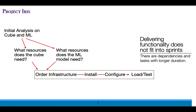As an example, in traditional projects where you were creating your own infrastructure, you'd have to do analysis on the amount and type of infrastructure you would need — what resources the cube needed, what resources the machine learning model needed — then order that infrastructure, install it, configure it, and do the initial load testing. If you're using cloud infrastructure, this task gets much simpler. You still have to do some analysis and understand the resource usage, but the cycle time to order, install, configure, and load diminishes dramatically.